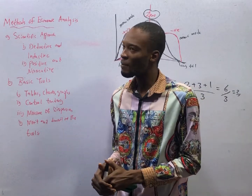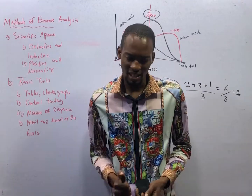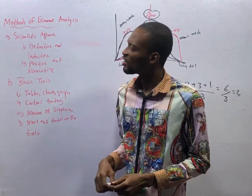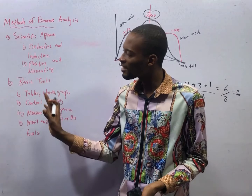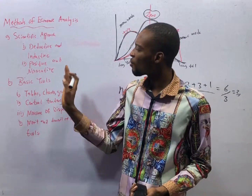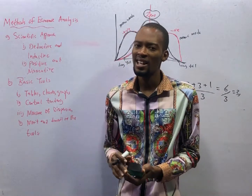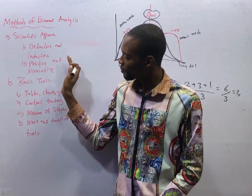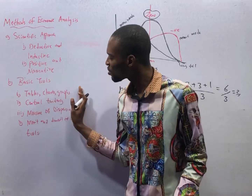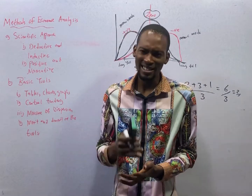All these are what Jam expects you to know under methods of economics analysis. For your assignment, open your Flash Nenas Jam app, go to question search, and search deductive reasoning, inductive reasoning separately, answer the questions, positive reasoning, or search scientific approach generally and answer the questions as a means of revision for episode 1. Then for these basic tools and charts, we shall deal with them in episodes 8, 9, and 10.